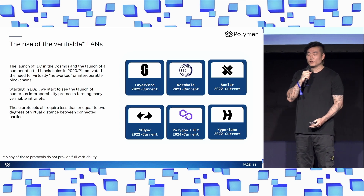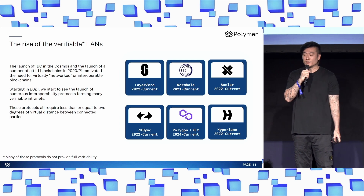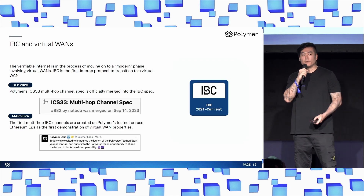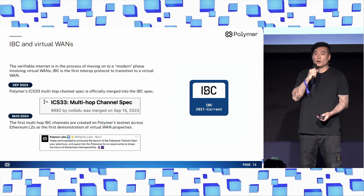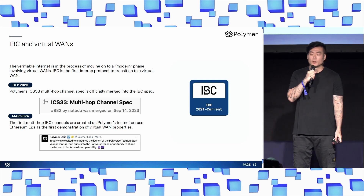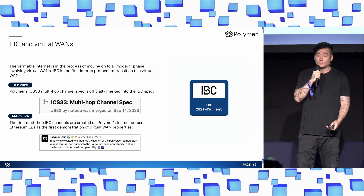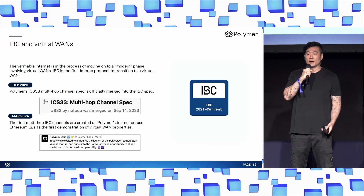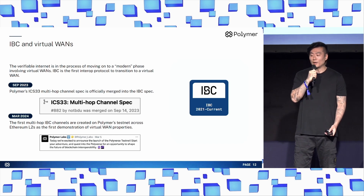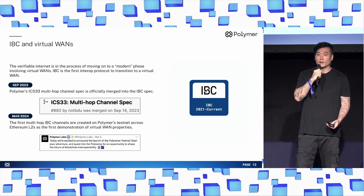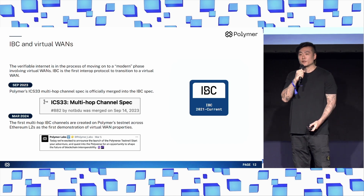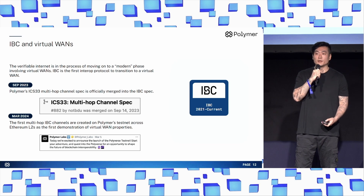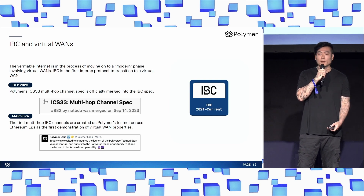These protocols all require less than or equal to two degrees of virtual distance or separation to work. Currently, the verifiable internet is in the process of moving on to a modern phase involving virtual LANs. IBC is the first protocol to transition to a virtual WAN. In September of 2023, Polymer's multi-hop channel spec was officially merged into the IBC specification. And in March of 2024, the first multi-hop IBC channels were created on Polymer's testnet across various L2s on Ethereum as a demonstration of WAN properties. Currently, the multi-hop IBC channel implementation is in the process of being upstreamed to the reference IBC implementation in Go.